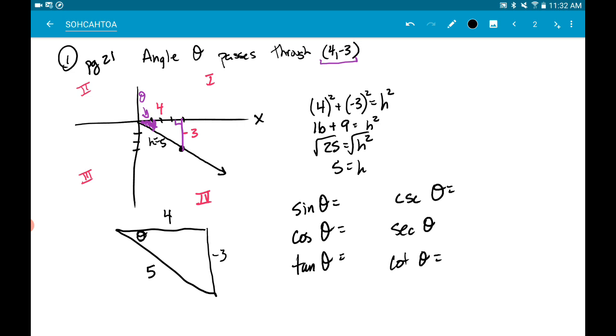When we talk about SOH, opposite over hypotenuse, the opposite here is negative 3, right, opposite of the theta, and the hypotenuse is positive 5. That's the answer for sine of theta. So it depends on how you do it. You could do the SOHCAHTOA first, or you could say, well, Mr. Smith told me that cosecant is just the reciprocal of sine, so I'm just going to flip those numbers.